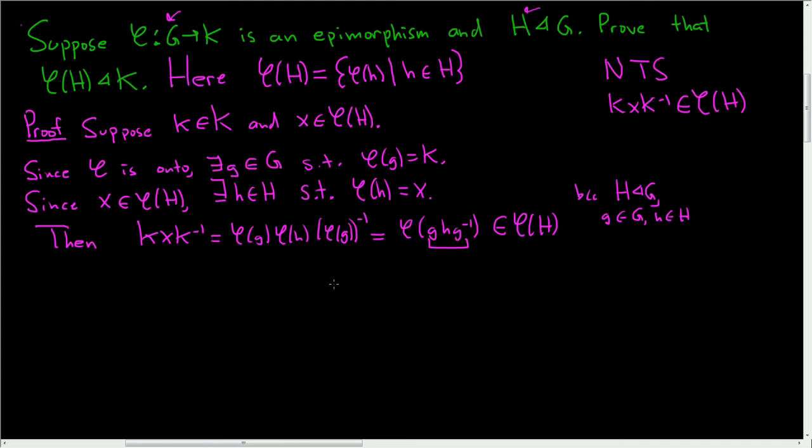So φ of that element is in the direct image. So k·x·k⁻¹ is in the direct image of H. Thus, the direct image of H is a normal subgroup of K. So I hope this helps.